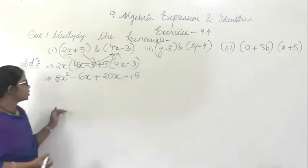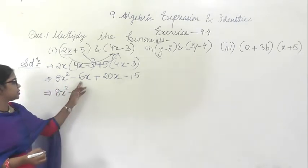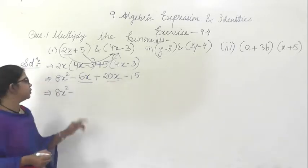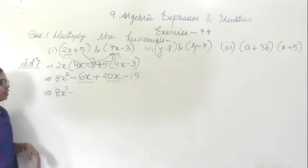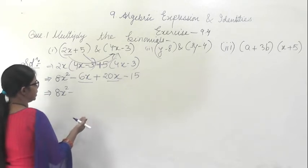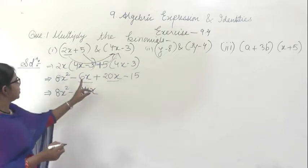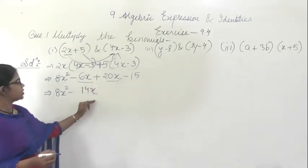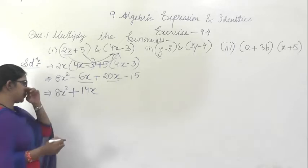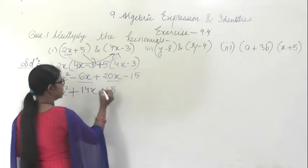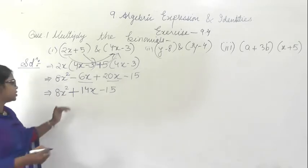Now here I will write down 8x squared. This term and this term are like terms — 20x minus 6x. Plus into minus is minus, so 20 minus 6 is 14x. Sign of the greater digit is plus, so this will be plus 14x. Then minus 15 remains. All the remaining terms are unlike terms, so we cannot simplify further. This is the answer.